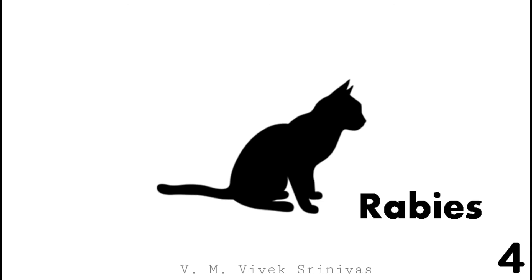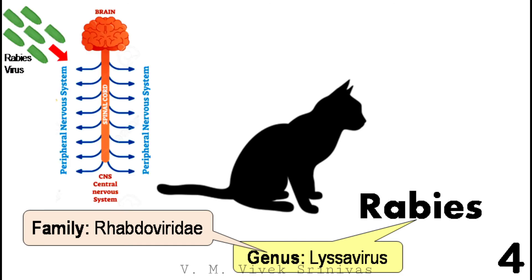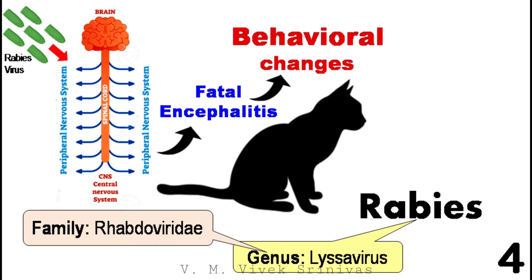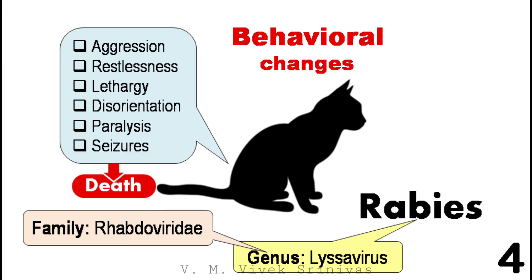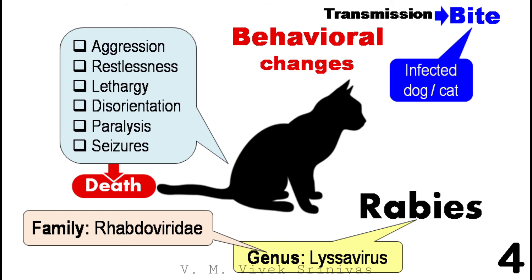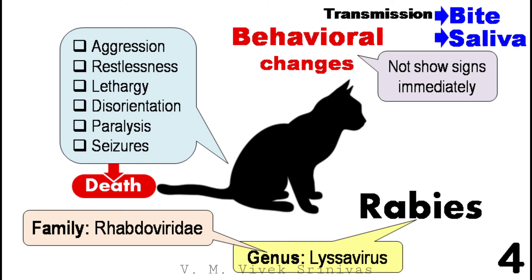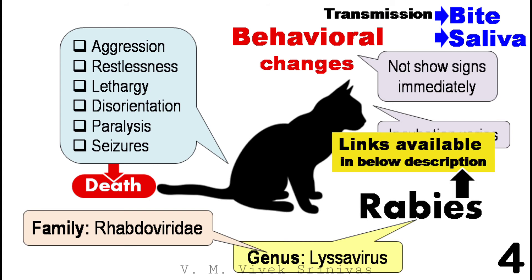Rabies. This infection is caused by the genus Lyssavirus, family Rhabdoviridae. Based on tissue tropism, this virus targets neuronal tissues, so they are termed a neurotropic virus. This virus causes fatal encephalitis, leading to changes in behavior in cats. The classic signs of rabies in cats include aggression, restlessness, lethargy, disorientation, paralysis, seizures, and sudden death. Rabies is most often transmitted through a bite from an infected animal. Less frequently, it can be passed on when the saliva of an infected animal enters another animal's body through mucous membranes or an open fresh wound. Animals will not show signs immediately following exposure; the incubation period can vary and symptoms can take months to develop. For rabies, we have already detailed in a previous lecture — the link is available in the description below.